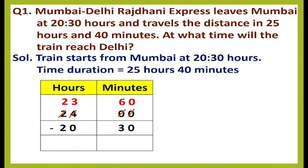Now subtract: 0 minus 0 is 0, 6 minus 3 is 3, 3 minus 0 is 3, and 2 minus 2 is 0. So we get 3 hours 30 minutes.